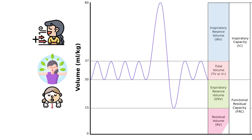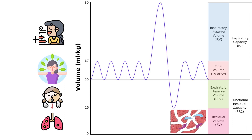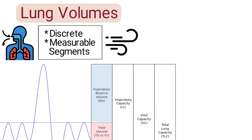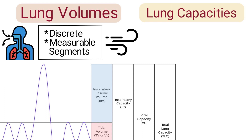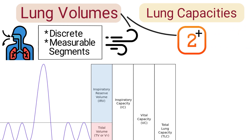Residual volume, which is the amount of air remaining in the lungs after a maximal exhalation. This volume ensures that gas exchange can continue between breaths and maintains lung elasticity. Then there are the lung capacities, which are combinations of two or more lung volumes.